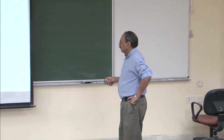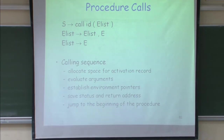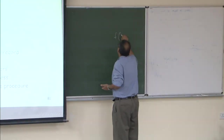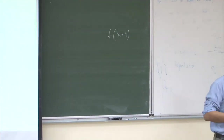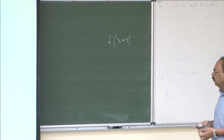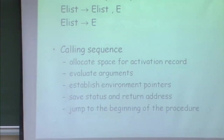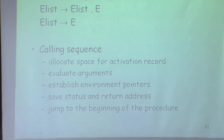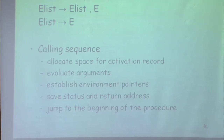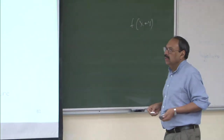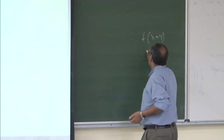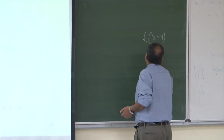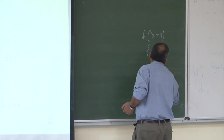We will look at the complete structure of the activation record. We also have to evaluate all the arguments because some of them would be expressions — for example, I could be passing something like 'call a function with x plus y'. So x plus y needs to be evaluated and then copied into the formal parameter. I need to evaluate all the arguments, then I must establish all the environment pointers.